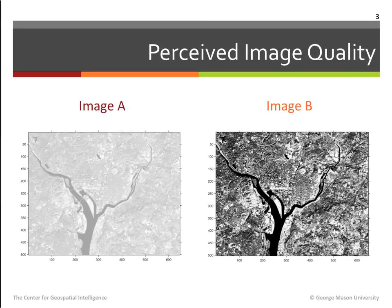Consider these two variations of the same satellite image. Which image has better quality? Which image seemed to provide a better view of the scene? Image A on the left is not as clear as image B on the right, since it does not highlight details. Instead, areas in the image seem to have very little variation in gray levels.